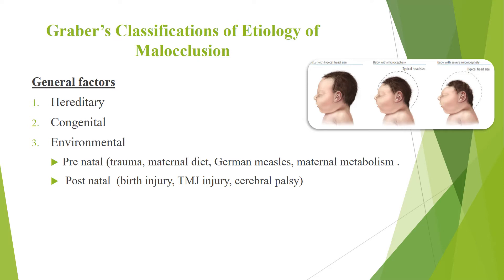Graeber's classification of the etiology of malocclusion includes hereditary factors, general factors, and congenital factors. Under environmental factors: prenatal factors such as trauma, maternal diet, German measles, and maternal metabolism; and postnatal factors such as birth injury, TMJ injury, and cerebral palsy.